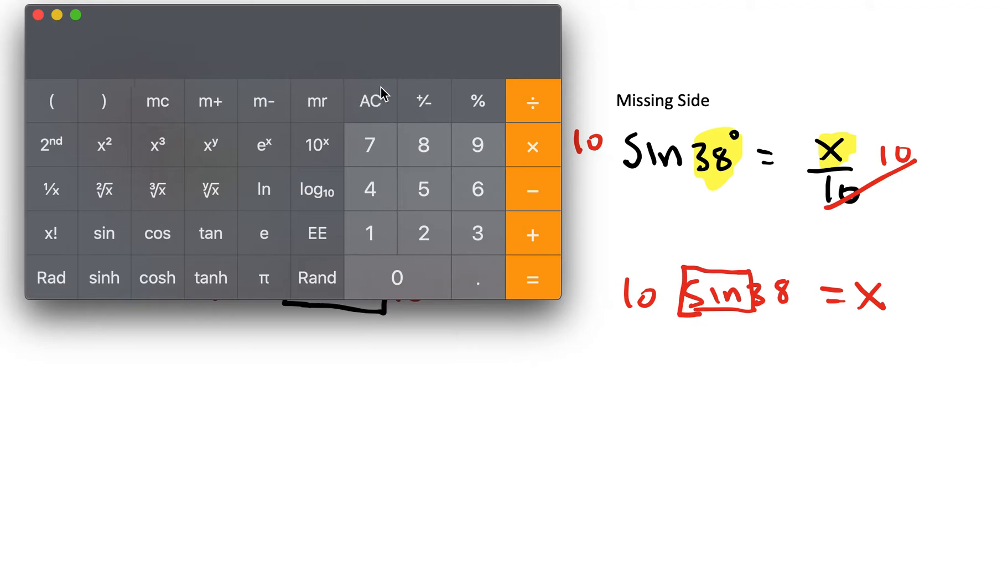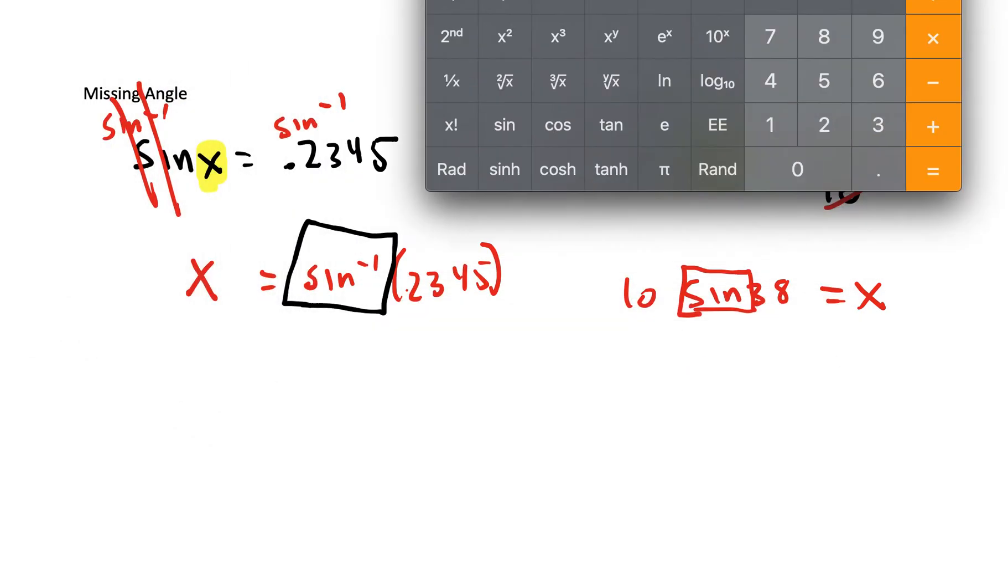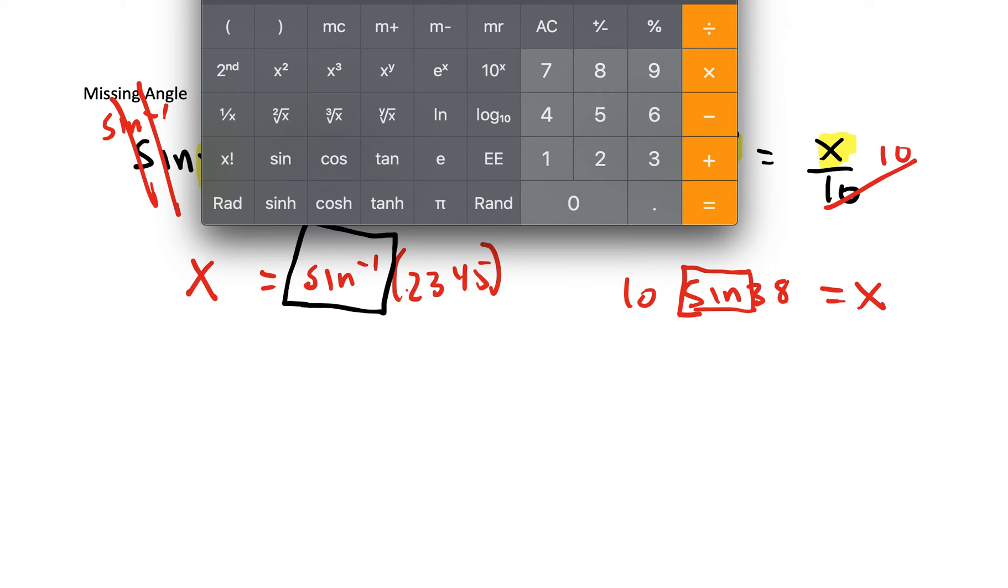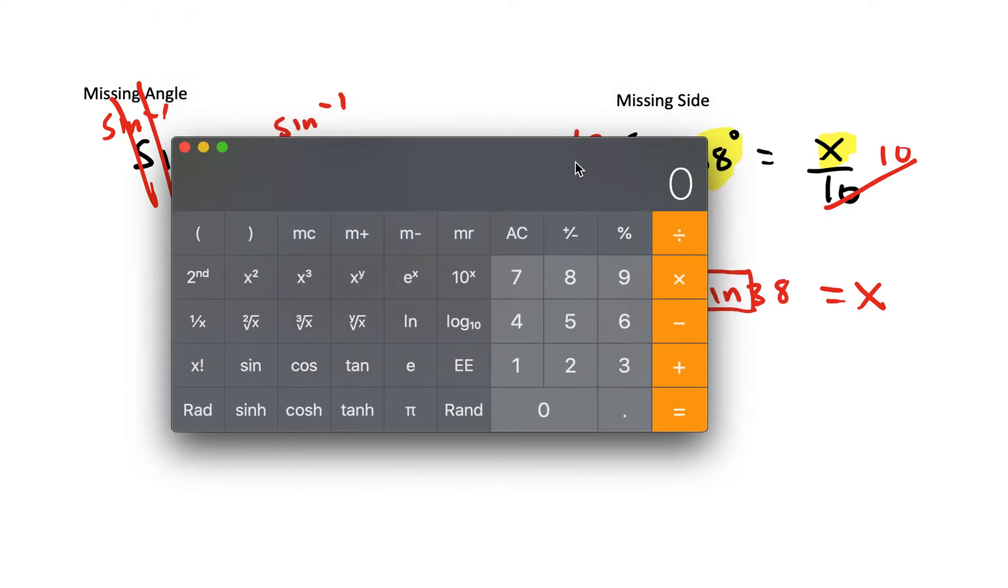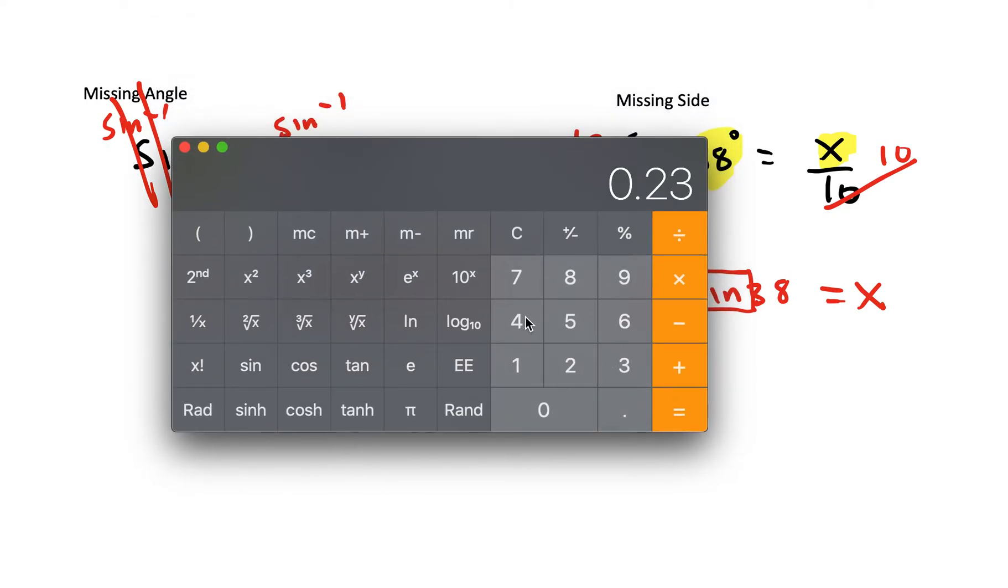If you're using an iPhone or a Mac calculator on a MacBook, to get the first one we want to first put the decimal, 0.2345.